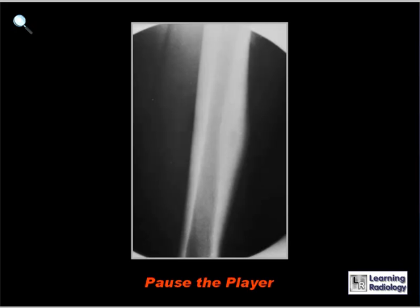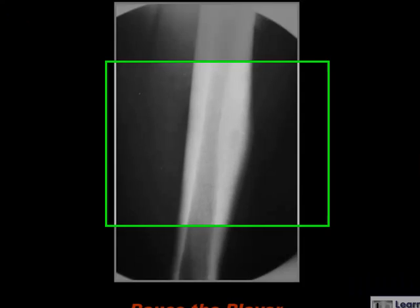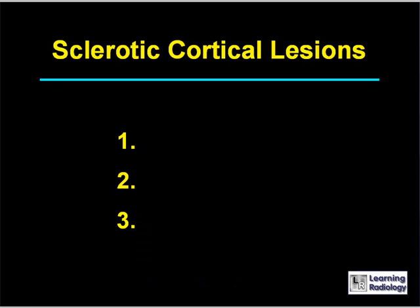Here's the next differential diagnosis. The differential diagnosis is for a sclerotic cortical lesion in bone. There are three major causes.